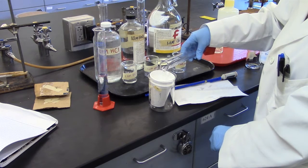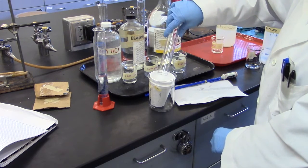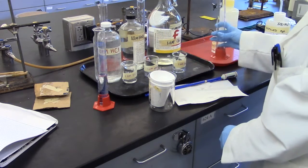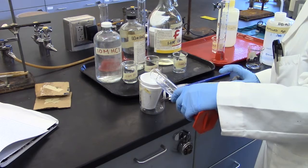Pour the sodium hydroxide solution into the calorimeter. Now add the hydrochloric acid.